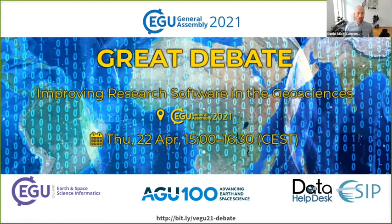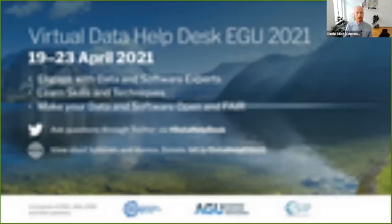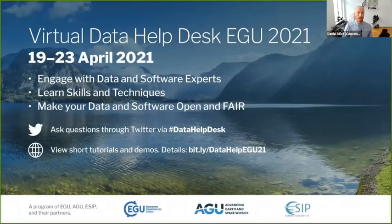Welcome everybody to the VEGU 2021 Great Debate on Research Software. On behalf of the conveners, I welcome you and our debaters to the first time the discussion on how we can improve research software in the geosciences takes the biggest stage the EGU has to offer. We thank the EGU team and our partners: the Earth and Space Science Informatics division, our co-sponsor the American Geophysical Union, and the ECIP Data Helpdesk. Check out the tutorials at bit.ly/datahelp EGU21.